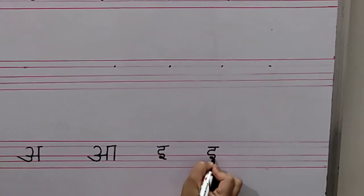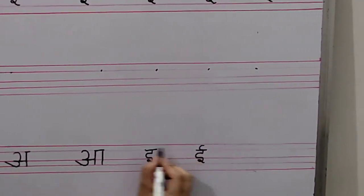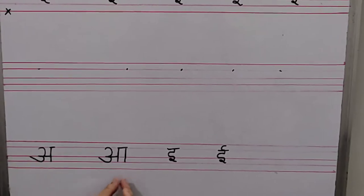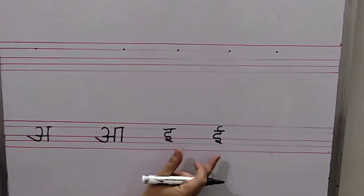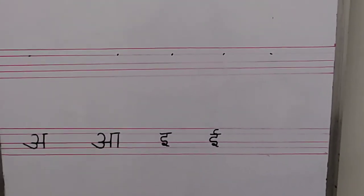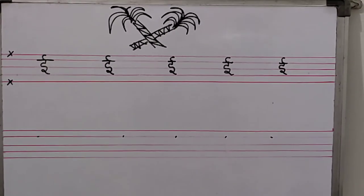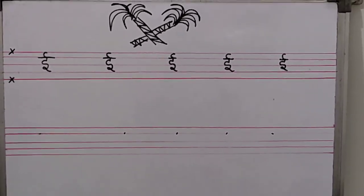Practice the sounds clearly. A-aam, a-anaar, a-aam, e-imli, e-e. Like this all children practice eek. Okay, thank you.